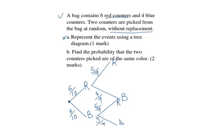So this is the tree diagram representing that information. We will use the same tree diagram to answer part B, where we are told to find the probability that the two counters which are picked are of the same color. This means that we are calculating the probability of red, red, or the probability of blue, blue.